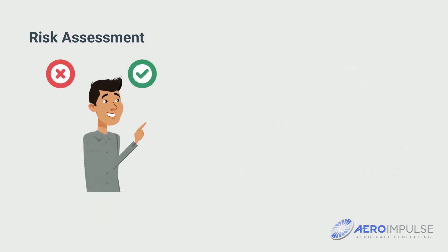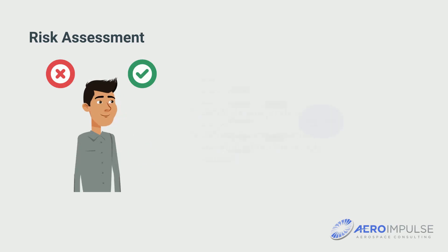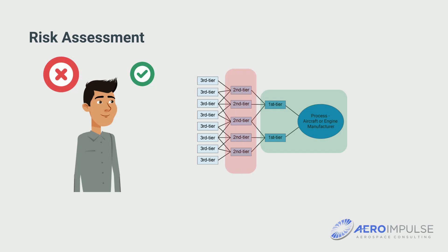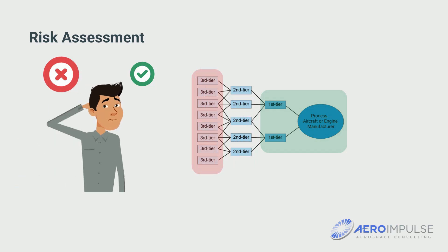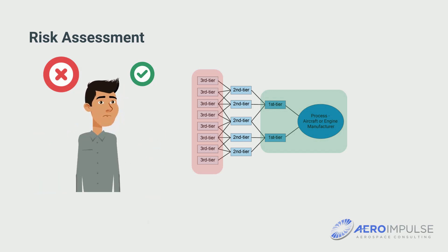Your counterfeiting risk depends not only on what you produce, but also where your organization is located within the aerospace supply chain. If you are at the end of the supply chain with one of the large corporations, your counterfeit risk comes from your component suppliers, who in turn purchase their parts or assemblies from their subcontractors or distributors. It is then difficult to identify counterfeit parts directly because they are on a circuit board somewhere of the purchased component.